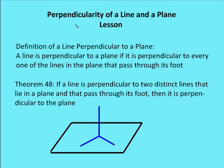Let's talk about the definition of a line perpendicular to a plane. A line is perpendicular to a plane if it is perpendicular to every one of the lines in the plane that pass through its foot.